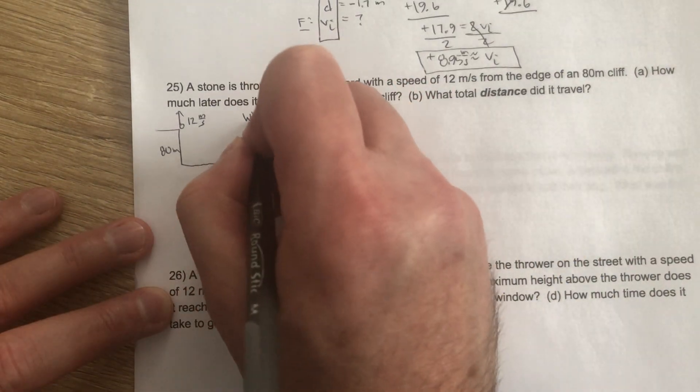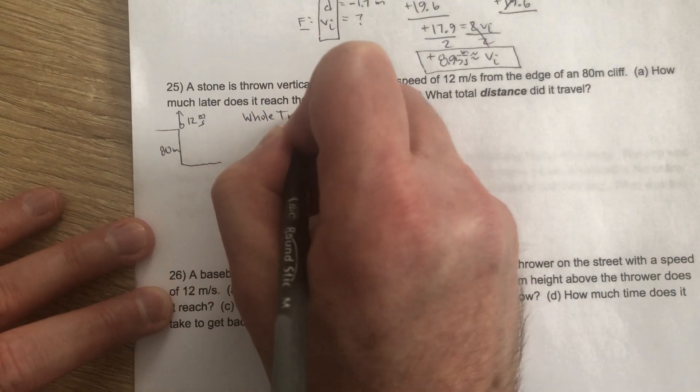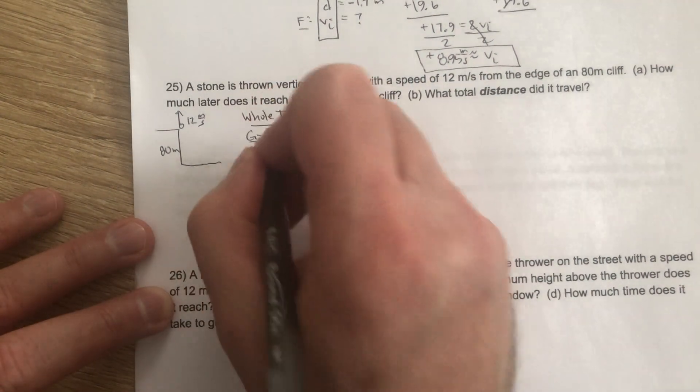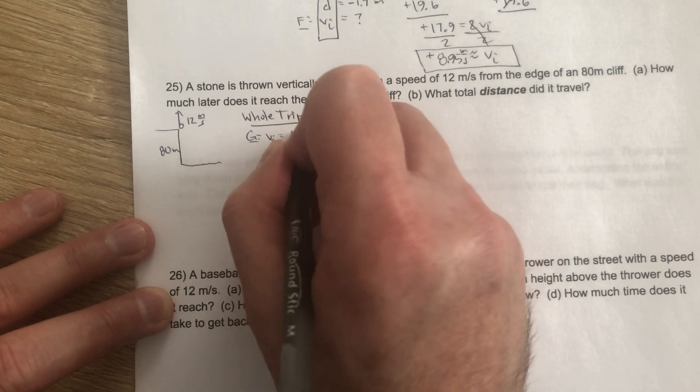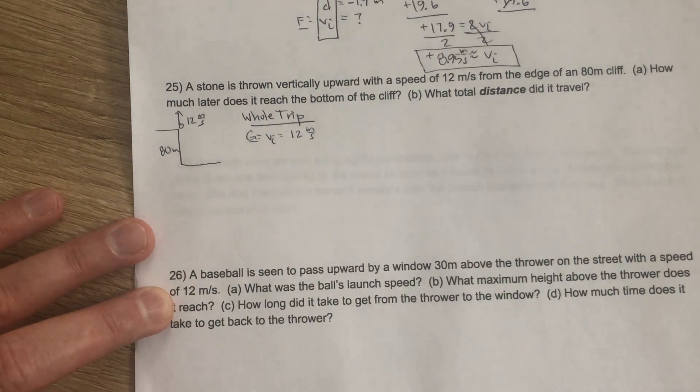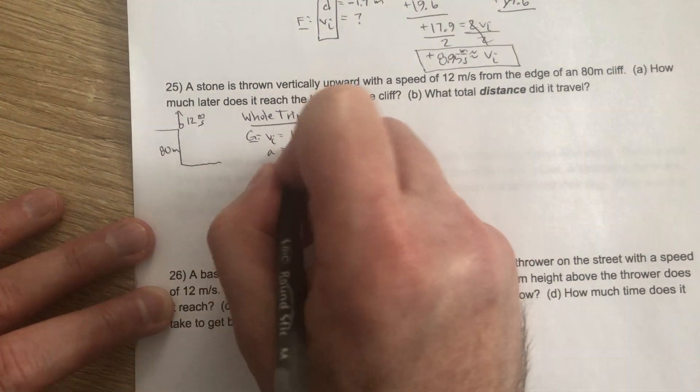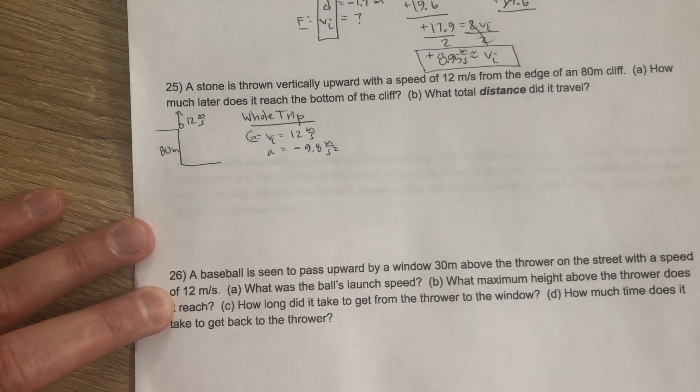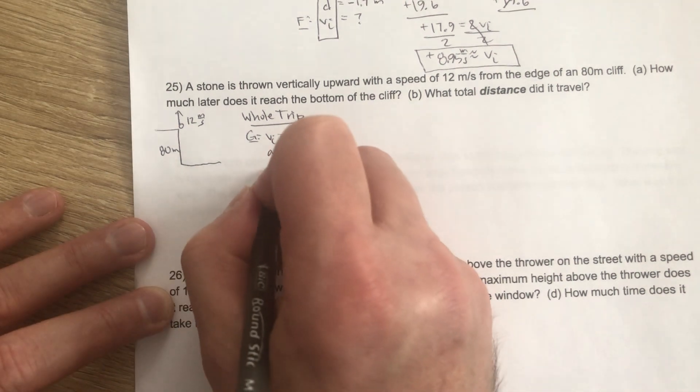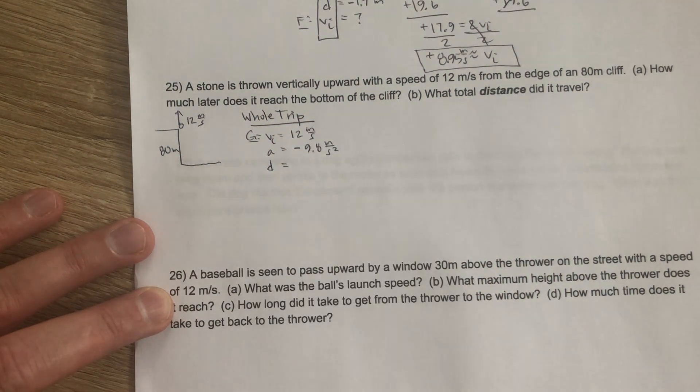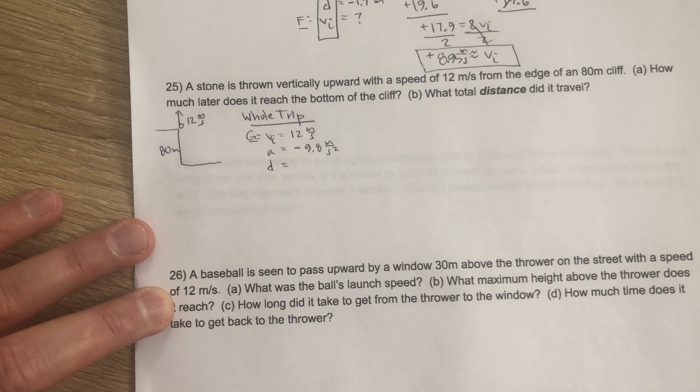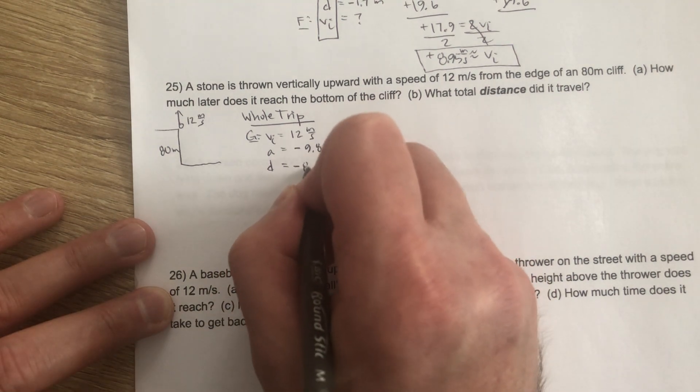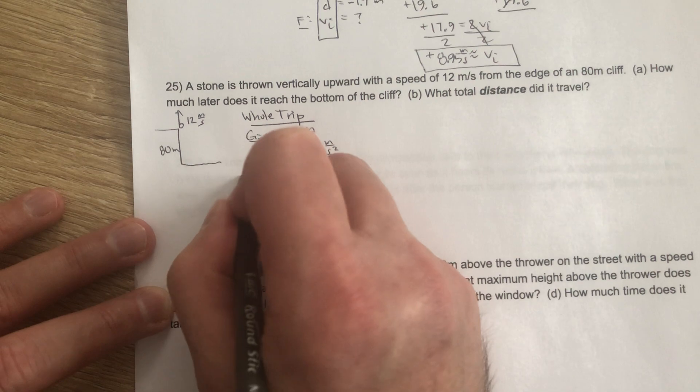We're going to analyze the whole trip. Given information, we know the initial velocity is 12 meters per second. Acceleration from gravity, even on the way up, it's still being pulled downward the entire time, negative 9.8 meters per second squared. And displacement, as opposed to distance, displacement is where something ends up compared to where it started. So it ends up 80 meters below where it starts when we're talking about the entire trip, so we can find time.